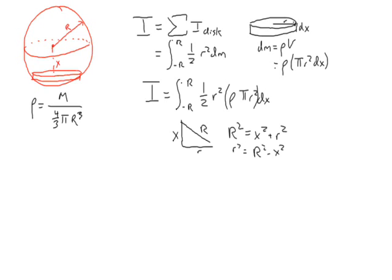Substituting back into the integral, we have I equals one-half rho pi, because rho and pi are constants, times integral from negative r to r. Since there are two little r squareds, we have integral of r squared minus x squared, quantity squared, dx. You need to expand this to integrate.